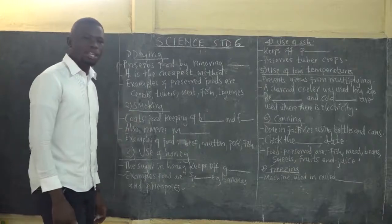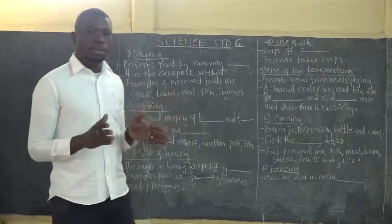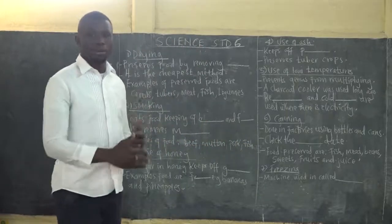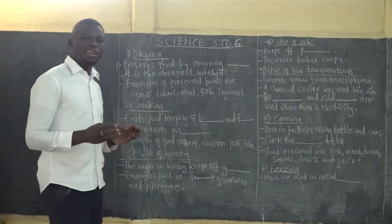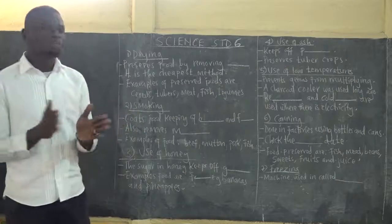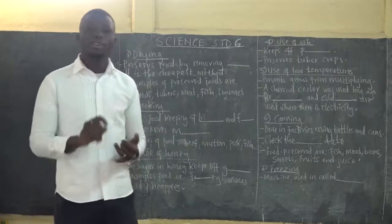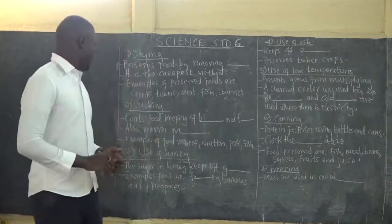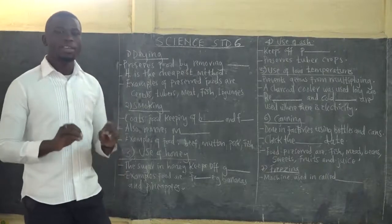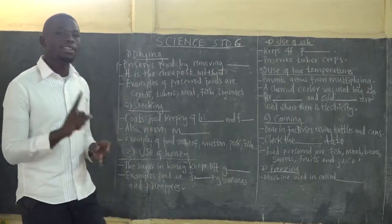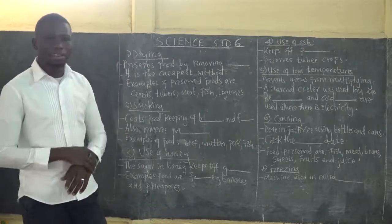Now looking at smoking. How does smoking preserve food? Food is exposed to smoke from fire, and the smoke coats the food. This coating keeps off bacteria and fungi, which are disease-causing organisms — germs. Smoking also removes moisture from food, leaving it dry. Removal of moisture is called dehydration. So both smoking and drying perform dehydration on food.